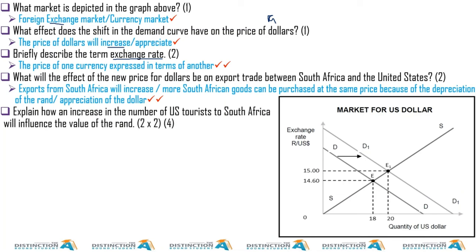Americans can get the rand at a cheaper price, meaning they can buy more in South Africa. This will create an oversupply of the dollar and that will cause the rand to appreciate again. That is why this market is very volatile — the minute the rand is cheap, they start buying our goods; when they buy our goods they are oversupplying their currency and demanding the rand, which causes the rand to appreciate. So it will always be up and down.